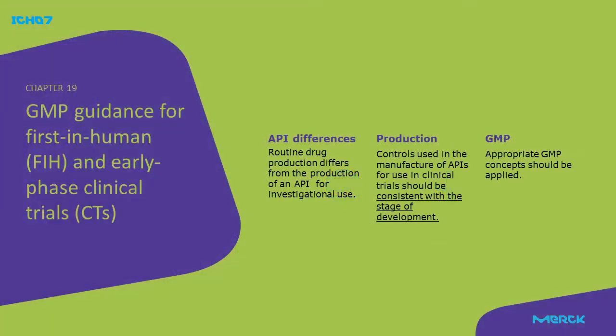A routine drug production differs from the production of an API for investigational use. Chapter 19 of the EU GMP Guide defines that controls used in the manufacture of APIs for use in clinical trials should be consistent with the stage of development, and appropriate GMP concepts should be applied. This approach reflects that requirements may change with the development of the manufacturing process.